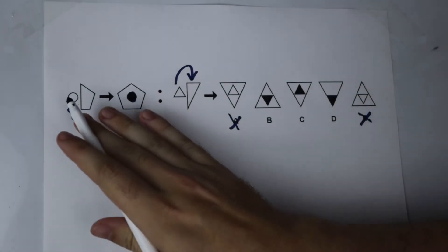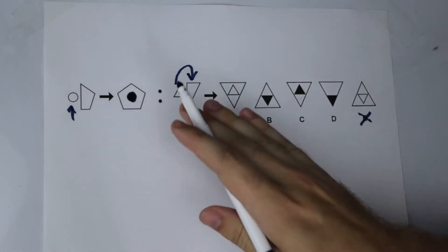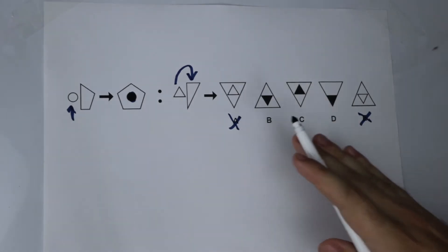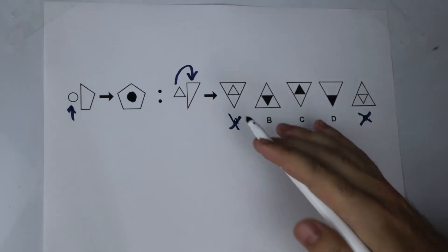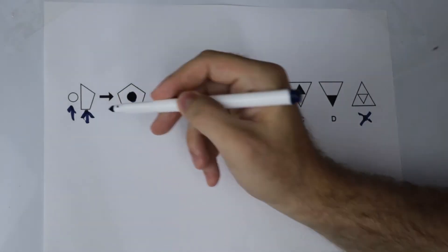We know from our first rule that we've got here on the left that our triangle has to be black, therefore it is B, C or D. But of course the question is not done there. We need to finish it off by looking at what happens to this part of the figure.